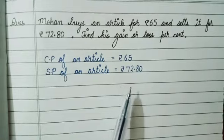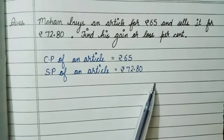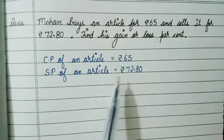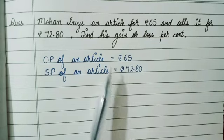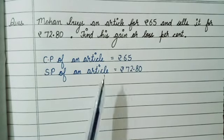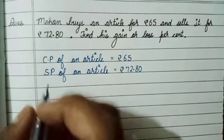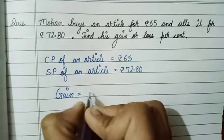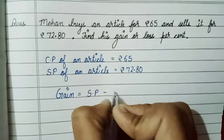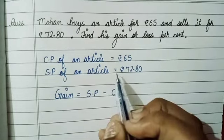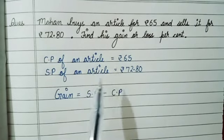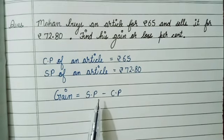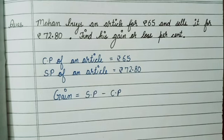So we have CP which is 65 and SP which is 72.80, and we have to find the gain or loss percentage. When SP is greater than CP, the condition is gain. The formula of gain is: gain equals SP minus CP when SP is greater than CP. And if CP is greater than SP, it will be a loss.